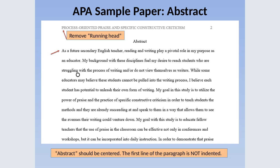Your professor may require an abstract. An abstract is a brief, comprehensive summary of the contents of the article you are writing. More details about writing an abstract can be found in the APA manual on pages 25 through 27, and you can also visit the APA website. The abstract heading should be centered, and the first line of the paragraph is not indented. Notice that on this page we have removed 'Running head' and just have a shortened version of the title.